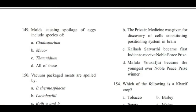Question 149: Molds causing spoilage of eggs include species of — Cladosporium, Mucor, Thamnidium, or all of these? Answer is D, all of these.